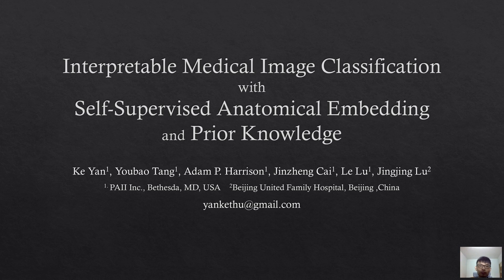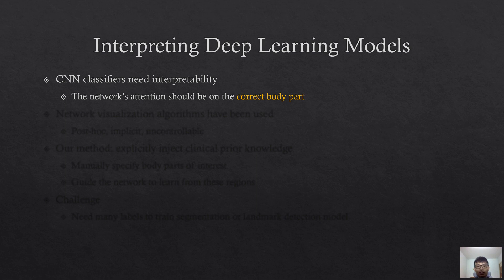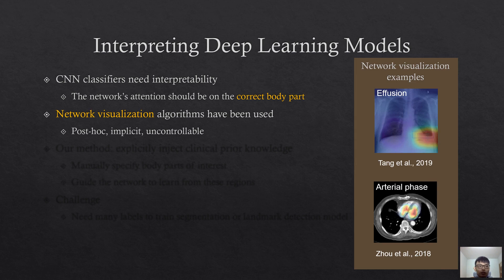Deep neural networks have been widely used for medical image classification. However, their interpretability is often in question, which is critical for clinicians to trust the prediction results. Specifically, it is important that the network's attention is on the correct body part. Network visualization algorithms have been used to generate attention maps for manual checking, but this method is implicit and uncontrollable.